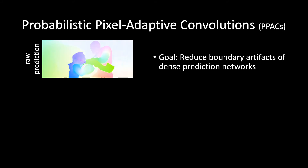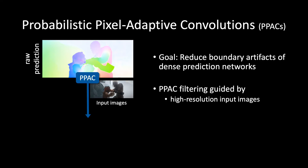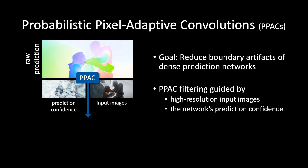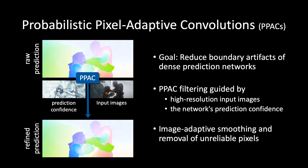Our paper aims to reduce boundary artifacts of dense prediction networks by introducing so-called PPACs. In contrast to previous work, the filter considers not only high-resolution input images for guidance, but also the network's confidences in its own predictions. As such, PPACs allow for image-adaptive smoothing and simultaneously propagating high-confidence pixels into less reliable regions.